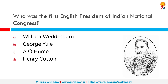Who was the first English President of the Indian National Congress? The correct answer is George Yule. George Yule was a Scottish merchant who served as the fourth President of the Indian National Congress in 1888 at Allahabad, the first non-Indian to hold that office.